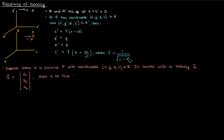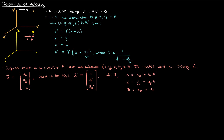Our goal is to find the primed components of the velocity of the particle p — in other words, the velocity components of p in the primed reference frame r'. In the reference frame r, the spacetime location of my particle x, y, z, and t is given by the following: x is just x0 plus ux times t, y is y0 plus uy times t, and z is z0 plus uz times t. And of course the time t is just t — time doesn't get translated in the reference frame r just because the particle is moving.